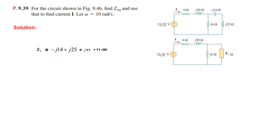We can also write Z1 in polar form as magnitude 11 at angle 90 degrees, since for j we write 90 degrees.